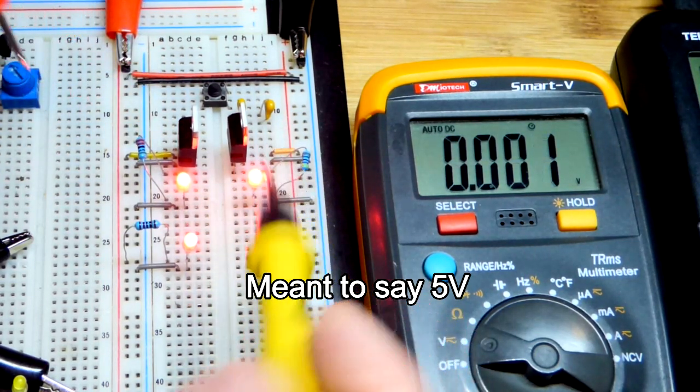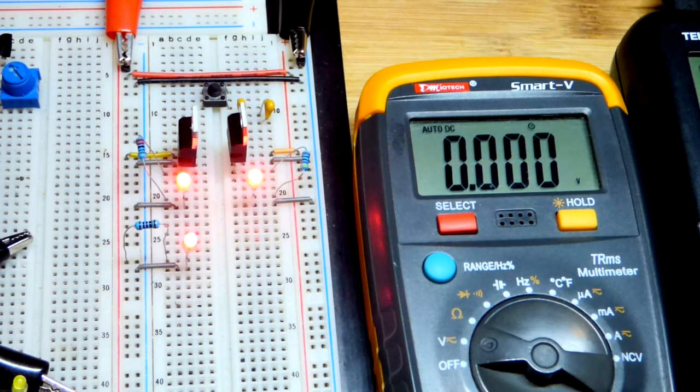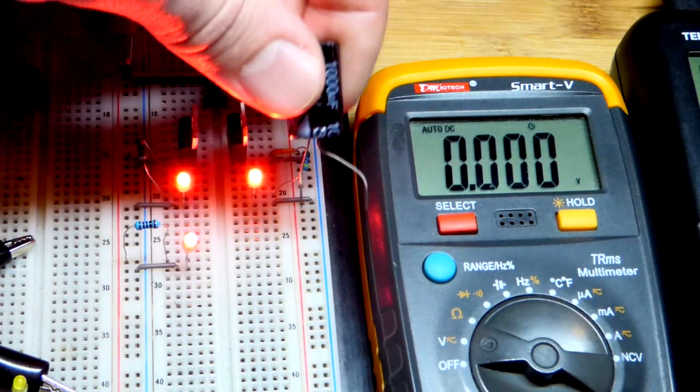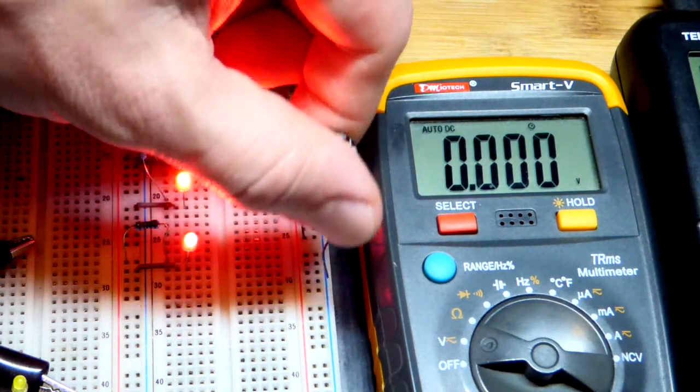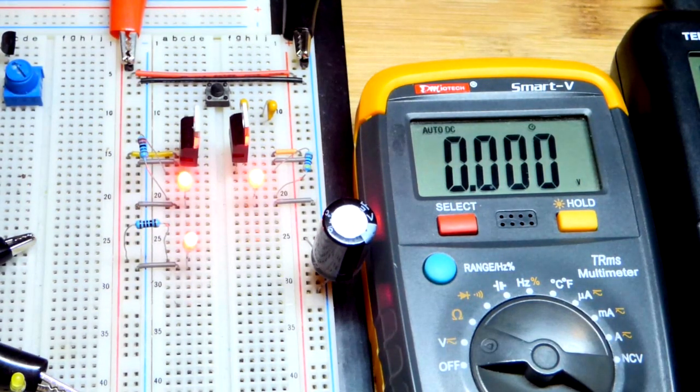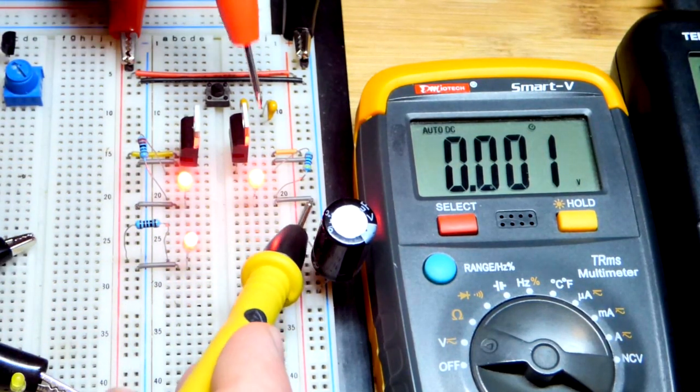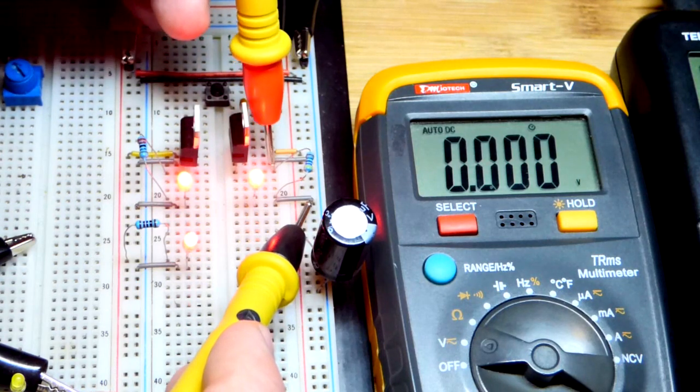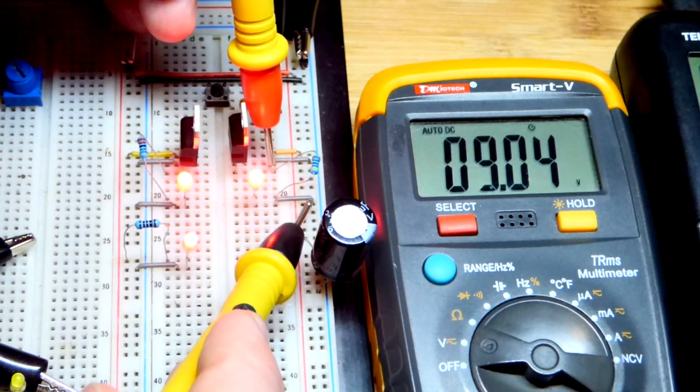So those capacitors are really important. Maybe if we put a capacitor to the supply rail, that may be all we need to help stabilize things. Let's take a look. So these are all good experiments to do when you're learning new circuits. And looks like that helped a lot too. So just stabilizing the power supply voltage with the capacitor helped a lot.